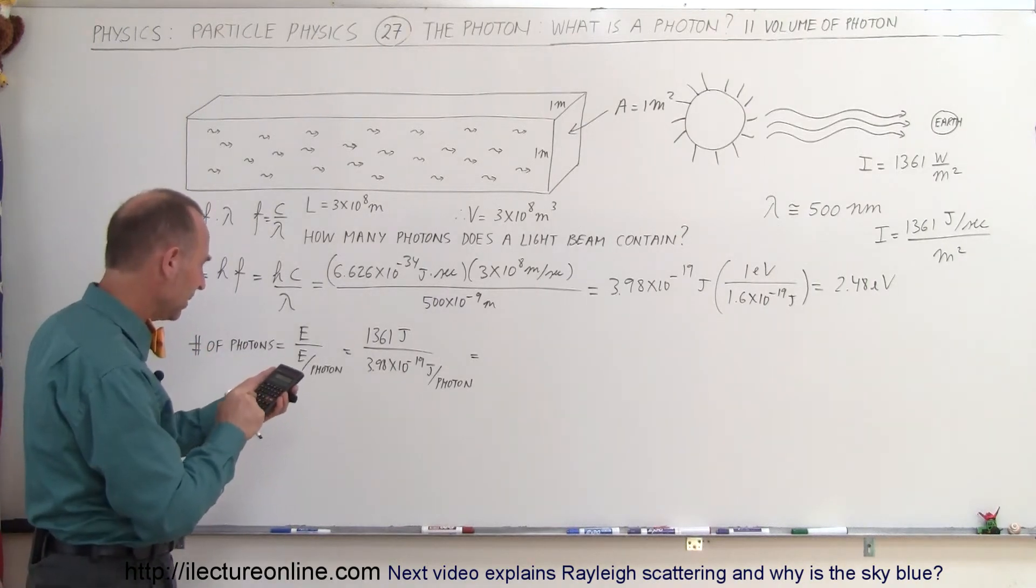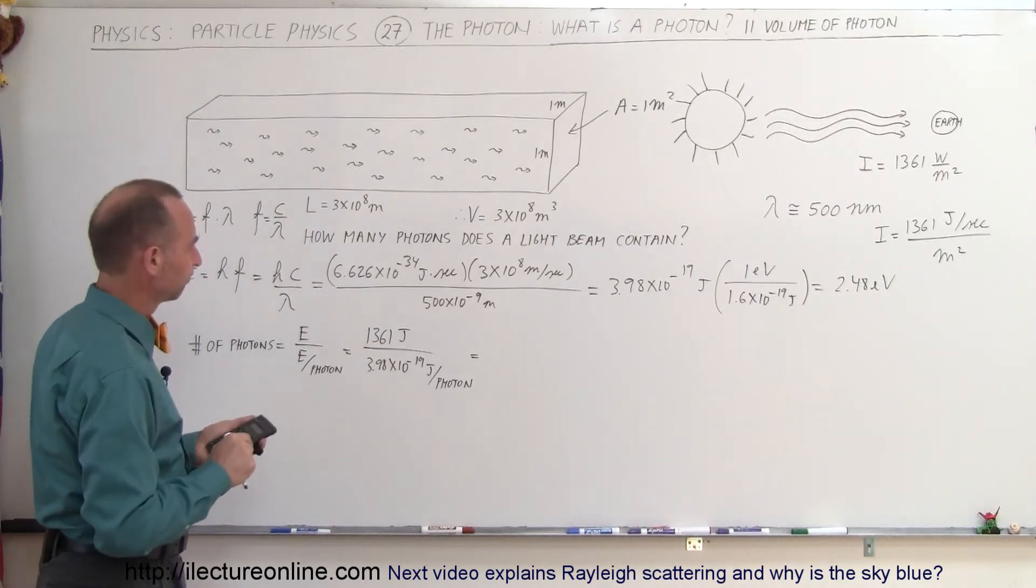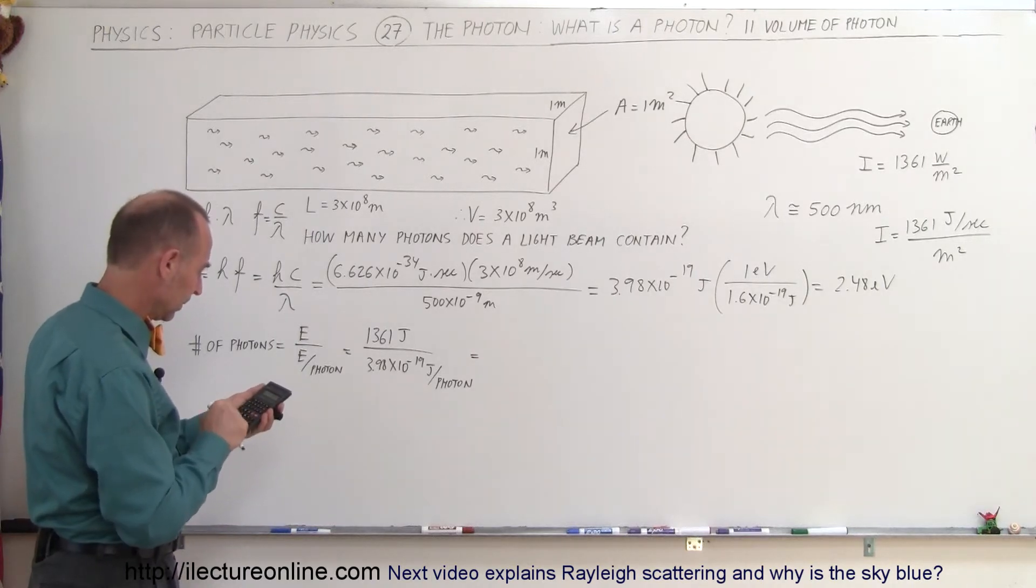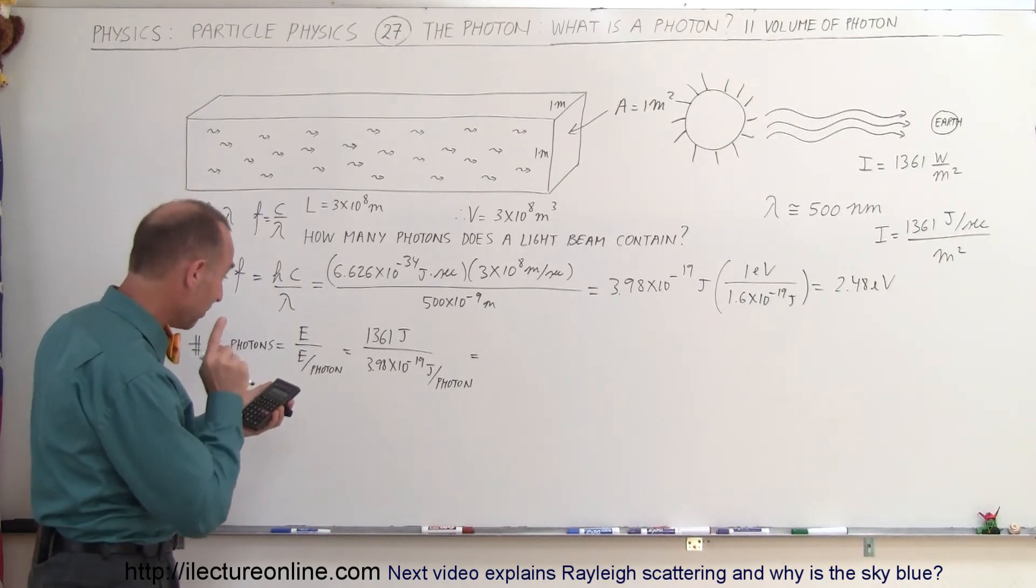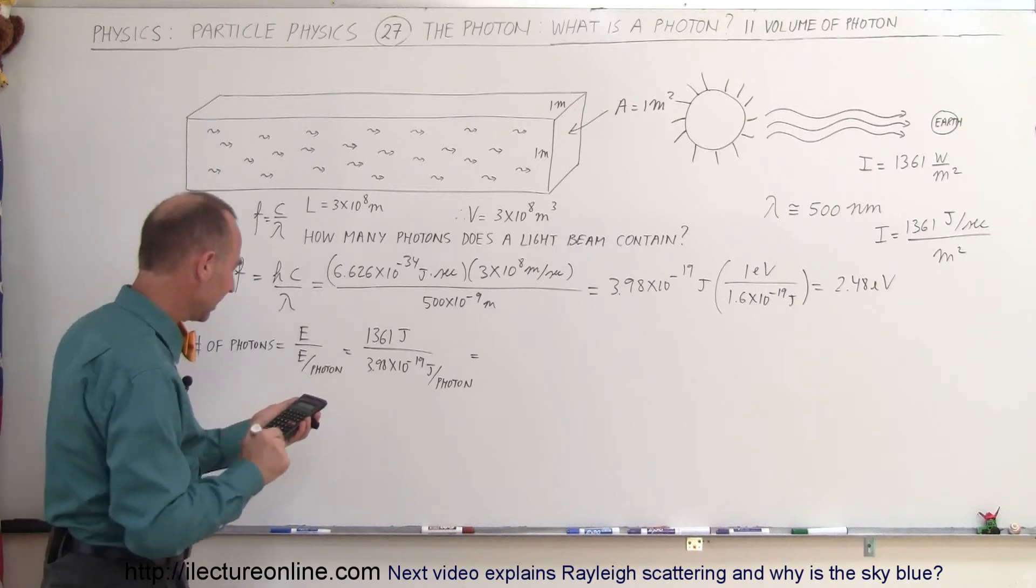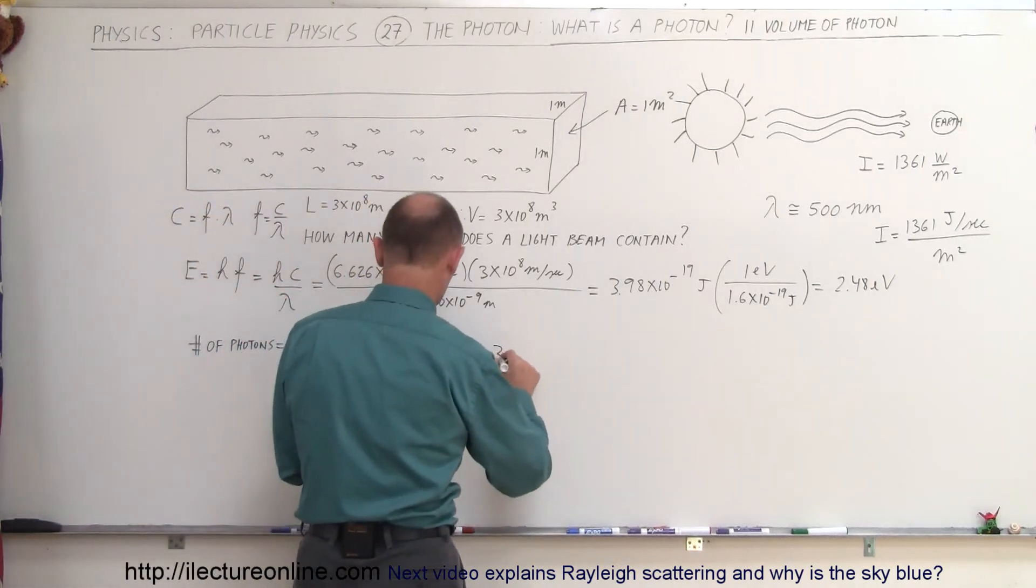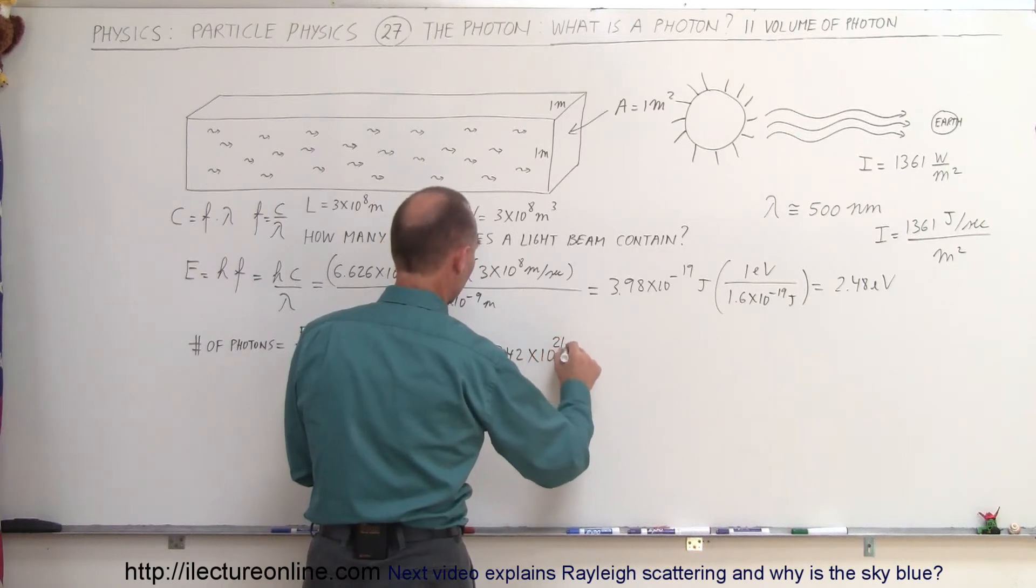So I divide that now by... I don't want to divide that. I want to take the inverse of that. Take the inverse of that and then multiply that times 1361. There we go. That's better. And that gives us the total number of photons of 3.42 times 10 to the 21 photons.